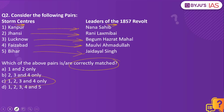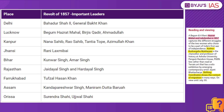Why have we taken this practice question? Because this article makes a mention of Hazrat Mahal and Lakshmibai, who played a major role in the 1857 revolt. The 1857 revolt is also called the first war of Indian independence. Many leaders across the country fought the British tooth and nail to send them out of the country.